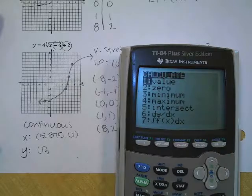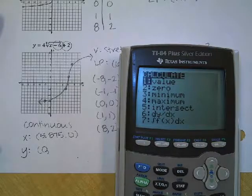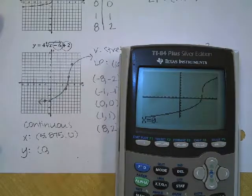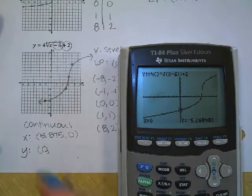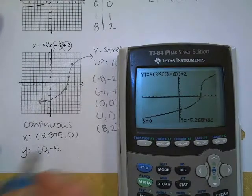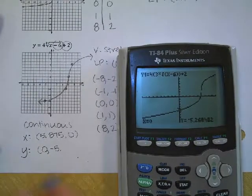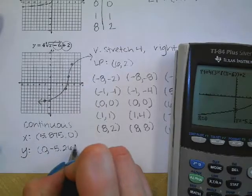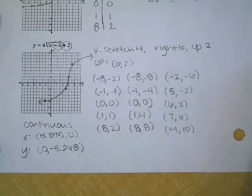And then how do I find the Y intercept? So second trace, number one, plug in zero. Negative 5.268. What else do we find?